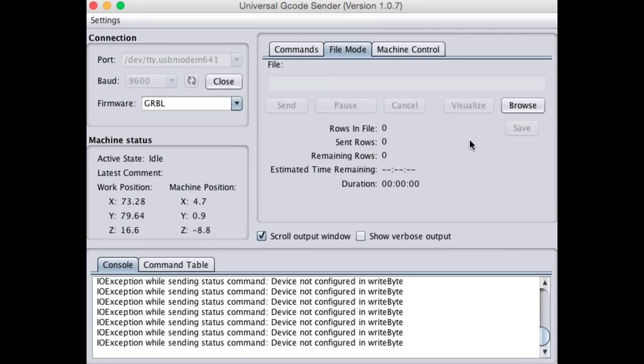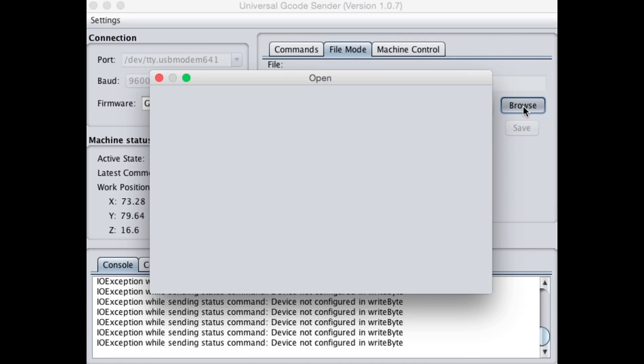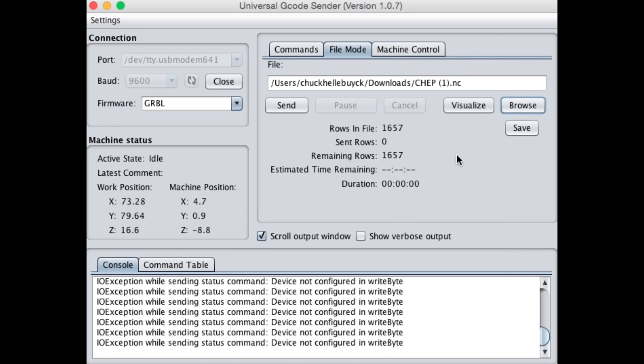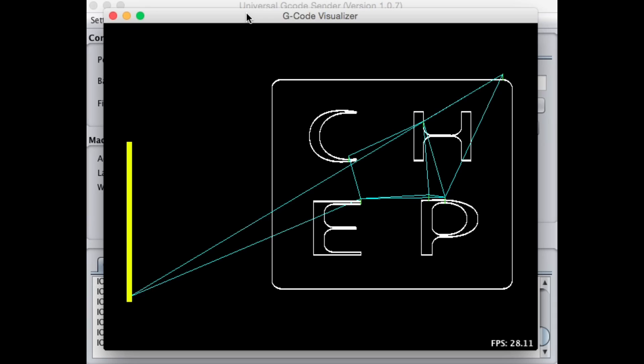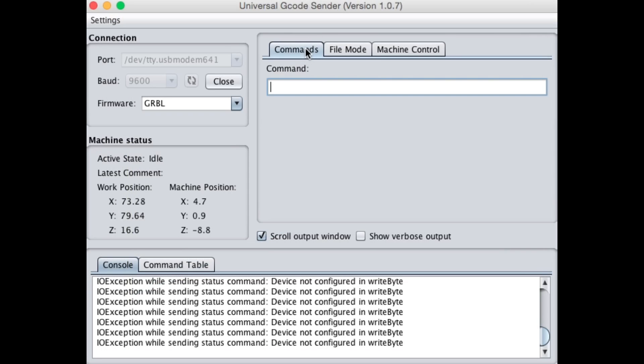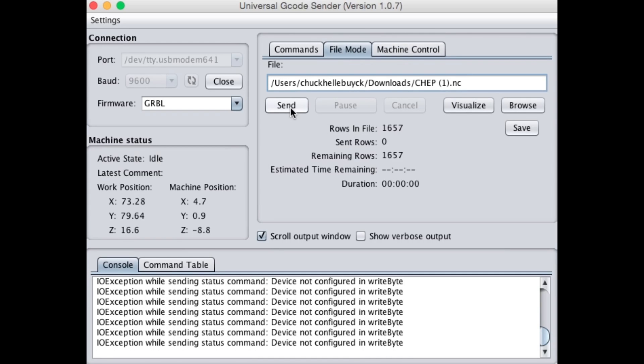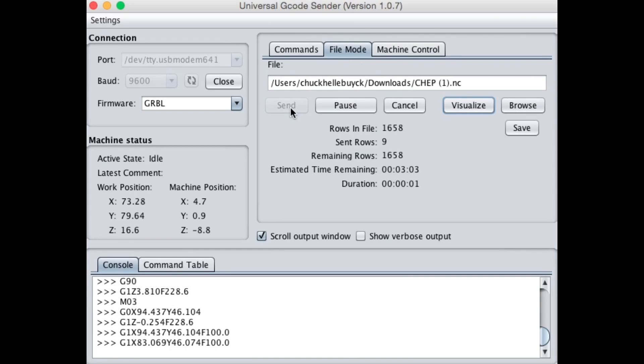So now I open the Universal G-Code sender. And then I click on the File Mode tab and Browse. And go find that file I just modified. And then once it's loaded, I can click on Visualize. And this will give me a visual representation of the toolpath. The yellow bar is the actual cutter. And the blue lines are the toolpaths. So that looks good. So then I go to Machine Control. Make sure I'm at the home position. And then click the Reset Zero to set the zero point. Then I click on Send. And it goes to the Shapeoko.